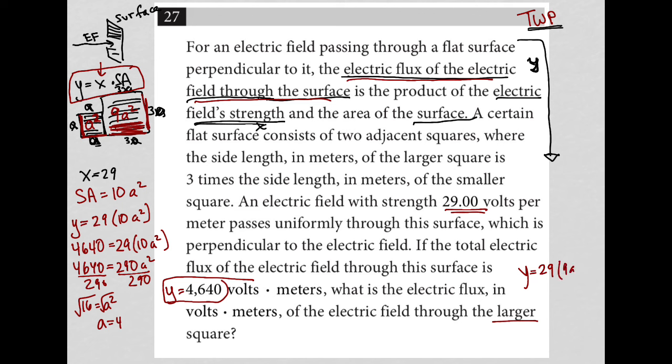So times 9A squared. But I know that A is 4, so A squared is 16. So this is actually Y equals 29 times 9 times 16. Let's do that math. In my calculator, 9 times 16 equals 144 times 29 equals 4176. So Y equals 4176.